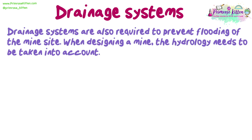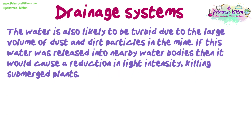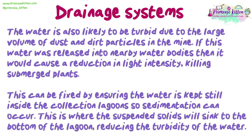Drainage systems. Drainage systems are also required to prevent flooding of the mine site. When designing a mine, the hydrology needs to be taken into account — whether the rocks are permeable or impermeable, and the risk of flooding both on site and in nearby water bodies if water were to run off. As part of the design process, a collection lagoon or reservoir should be included to collect water from across the site and release it slowly to prevent flooding in rivers and ponds nearby. The water is also likely to be turbid due to the large volume of dust and dirt particles in the mine; if released into a nearby water body it would reduce light intensity and kill submerged plants. This can be fixed by keeping the water still inside collection lagoons so sedimentation can occur, allowing suspended solids to sink to the bottom and reducing the turbidity of the water.